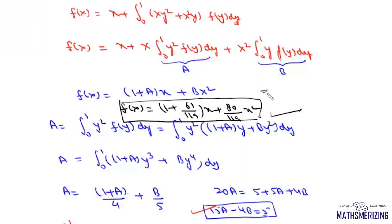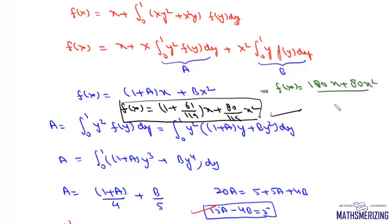We can also write this as f(x) equals (119 + 61x + 80x²) divided by 119.